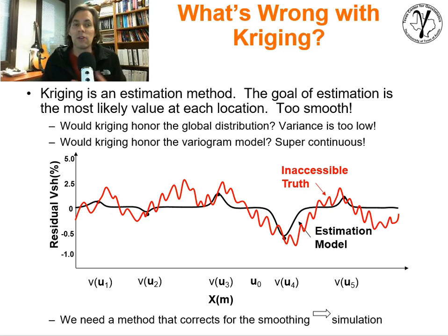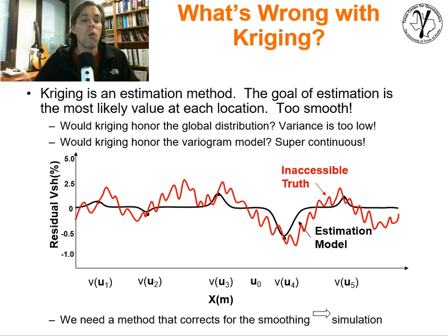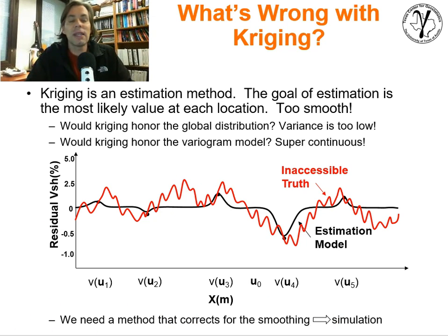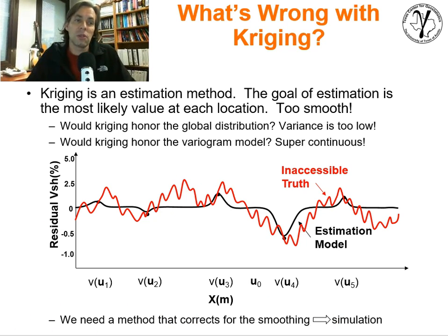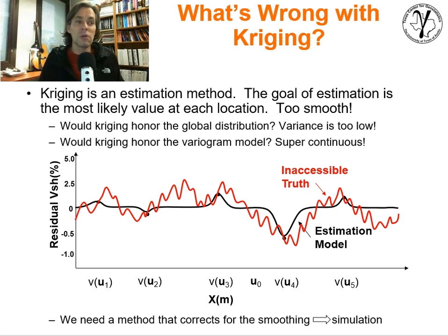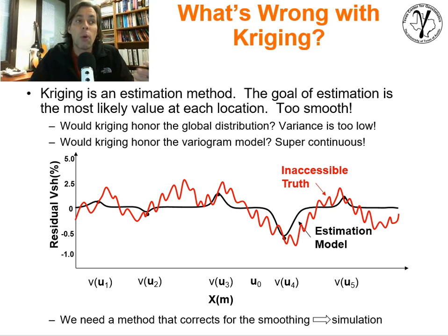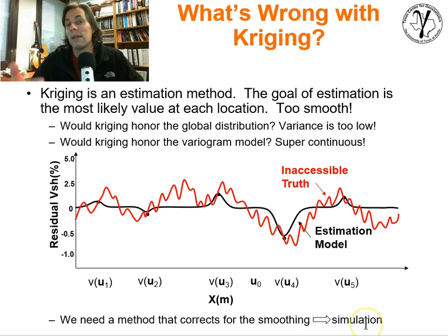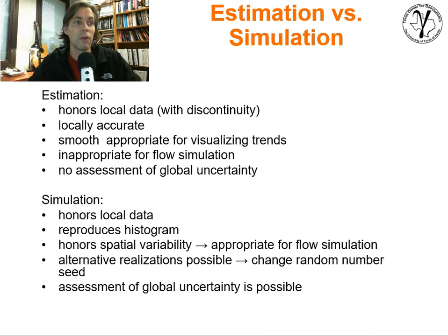But the actual phenomenon we're trying to estimate — the inaccessible truth — in fact looks like the red line. There's heterogeneity in it, there's variability in it. We need something that will provide us models that represent the entire distribution, have the extreme values, and aren't too continuous. If we're going to use these models for subsurface forecasting, it's important to get heterogeneity. We need a method to correct for that. That's the simulation method — that's our motivation.